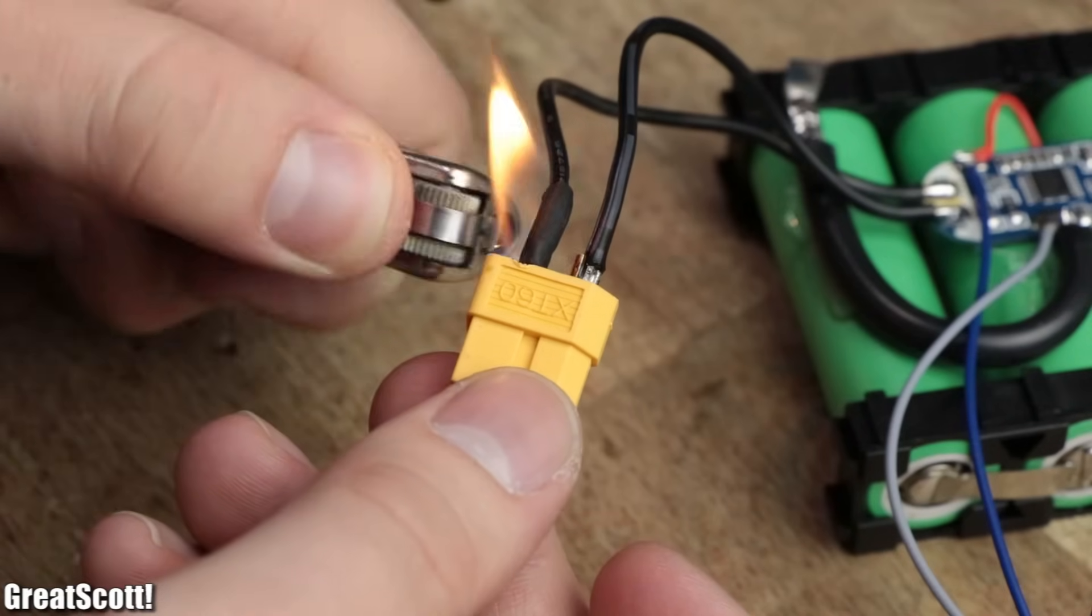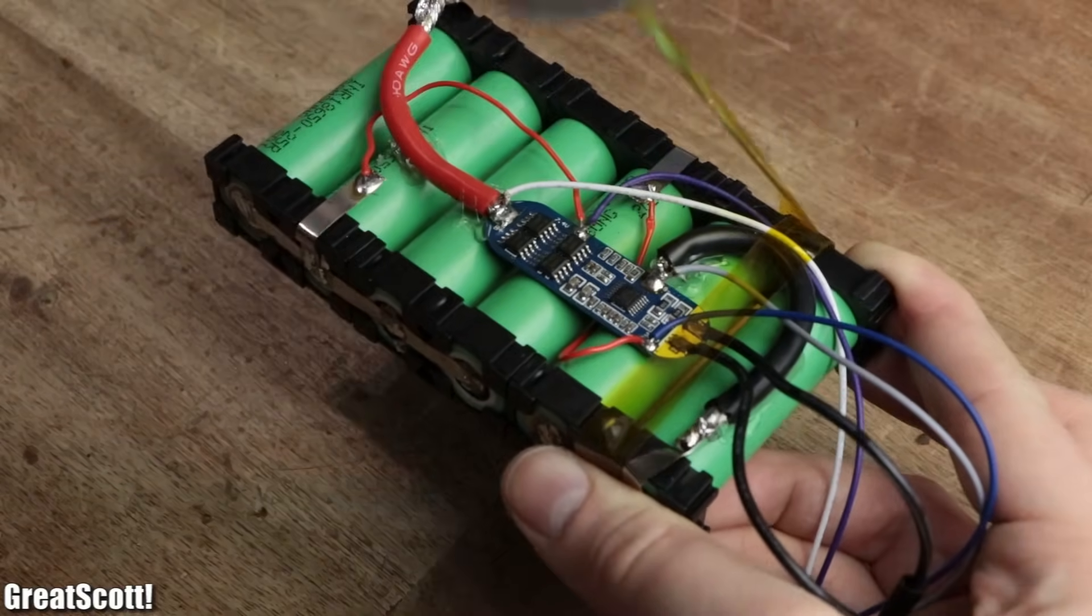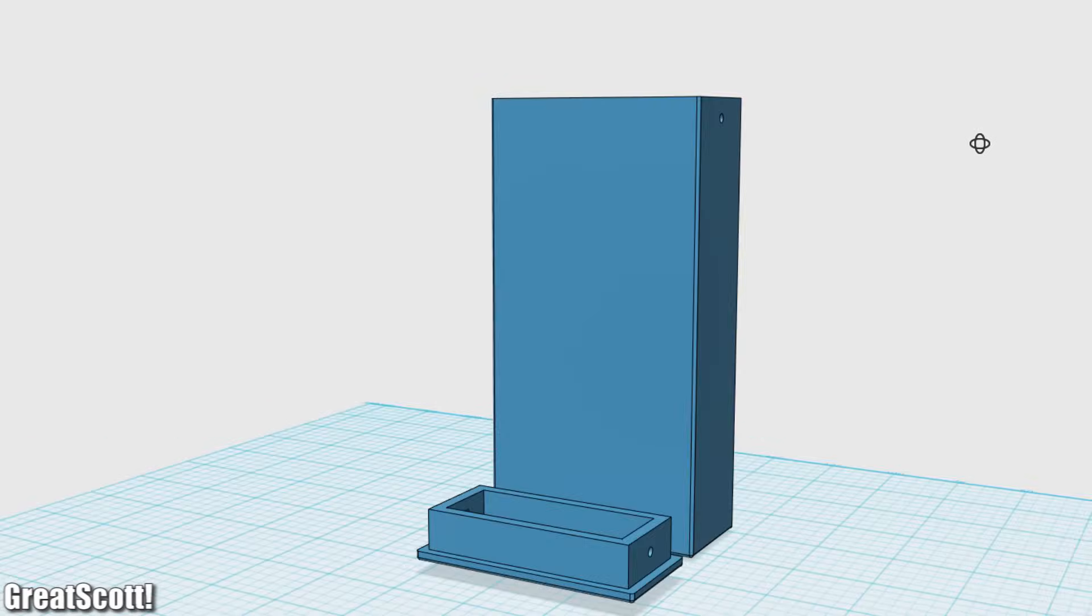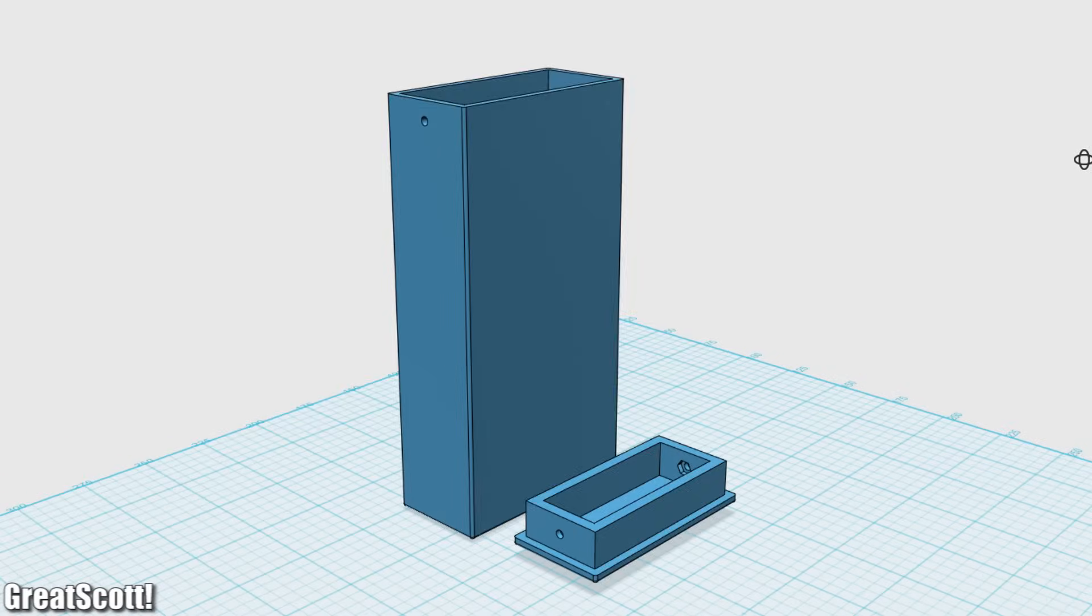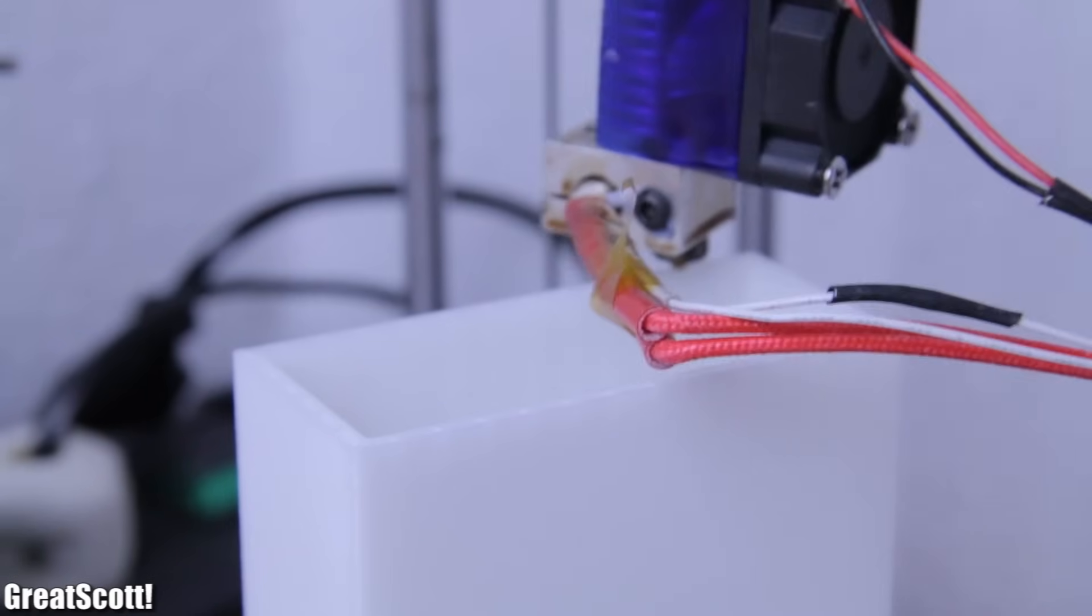And with those added protection features, the battery pack is finally complete. But it still looks a bit fragile and unprotected even with a couple layers of Kapton tape. So I went ahead and designed a decent housing for it with 123D Design that I then 3D printed with my Delta printer.